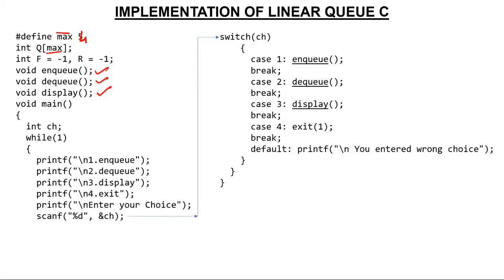In the main function, I've created an integer variable ch and used while(1) — condition always true — meaning we always enter the loop. Inside, there are print statements showing four options: press 1 to enqueue, press 2 to dequeue, press 3 to display, press 4 to exit. Since I want to insert an element, I pressed 1, so ch gets 1. Switch jumps to case 1, which calls the enqueue function.